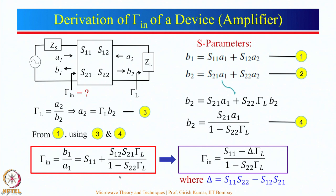This equation can be further simplified. The denominator is (1 minus S22·gamma_L). Expanding gives S11 minus S11·S22·gamma_L plus S12·S21·gamma_L, which can be written in simplified form. Here delta is given by the determinant of the S-matrix: delta = S11·S22 minus S12·S21. We will use this particular equation later on.